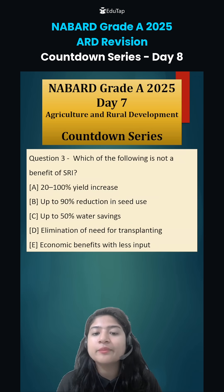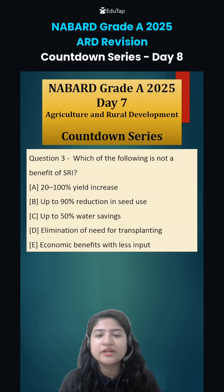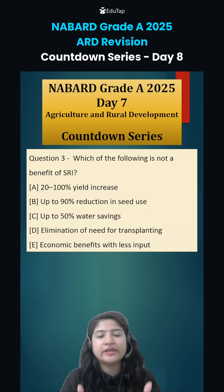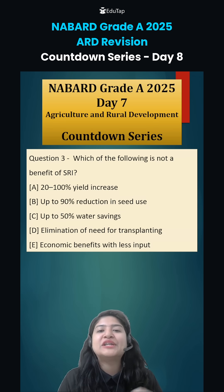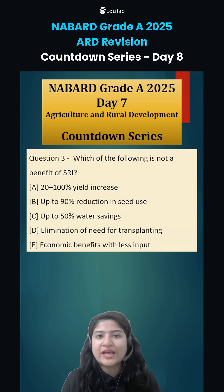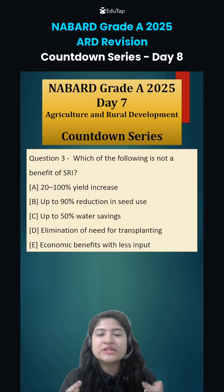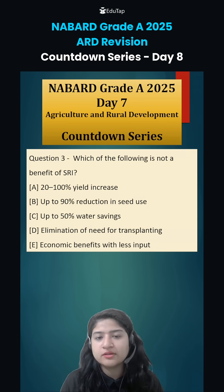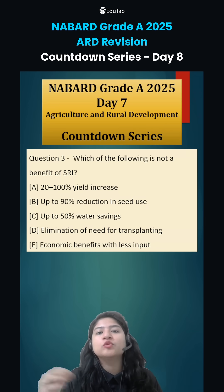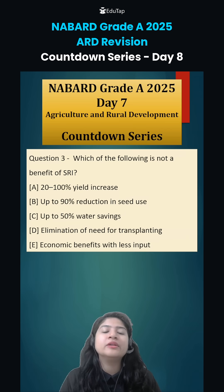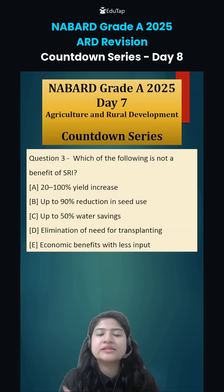Question number 3 asked which of the following is not a benefit of the System of Rice Intensification (SRI). In this method, water shock is initially given to the seedlings because rice generally requires flooded conditions in early phases. Due to the water shock, roots start to grow more in search of water. Once roots have elongated, normal water quantity is discharged. Longer roots absorb more nutrients, leading to more shoot and tiller formation, and ultimately more grain development. This is the whole concept of SRI.